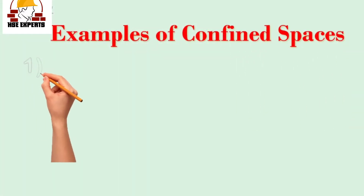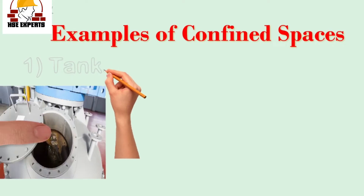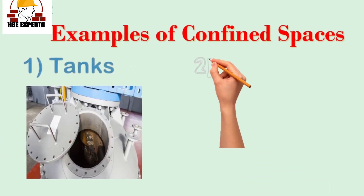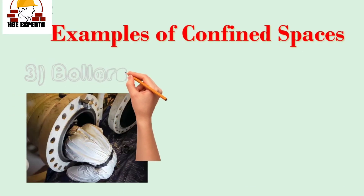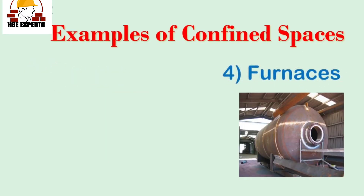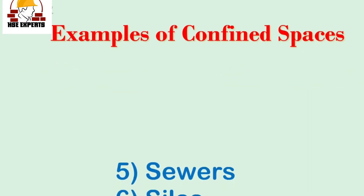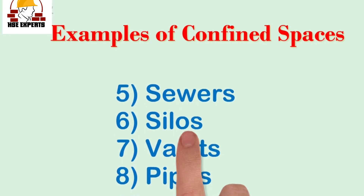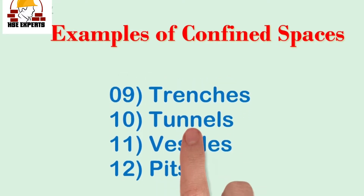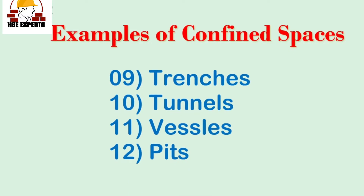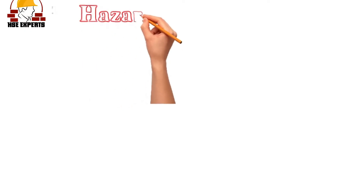Examples of confined spaces include tanks, manholes, boilers, furnaces, sewers, silos, vaults, pipes, trenches, tunnels, vessels, and pits. These are all examples of confined spaces.